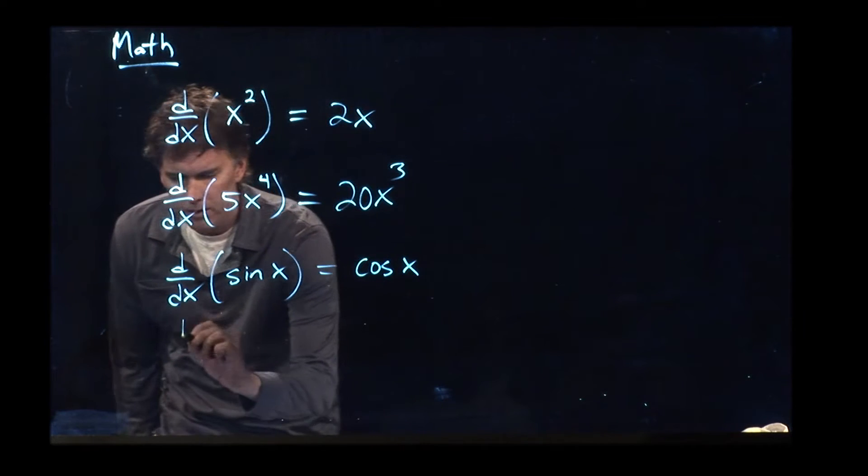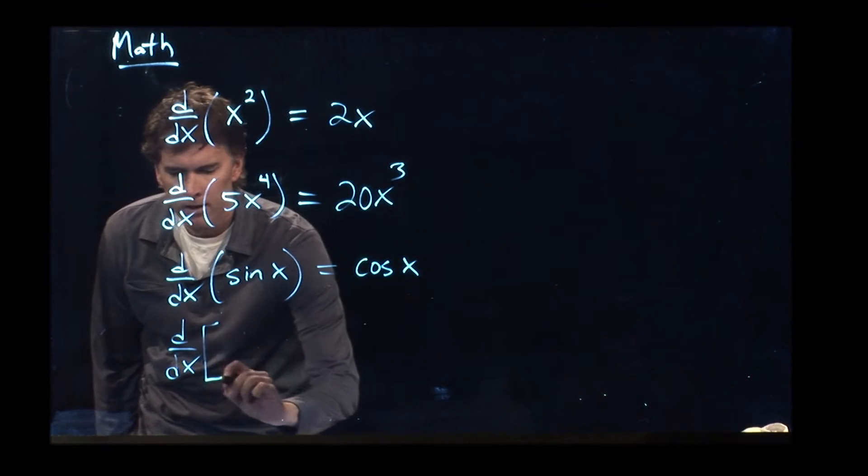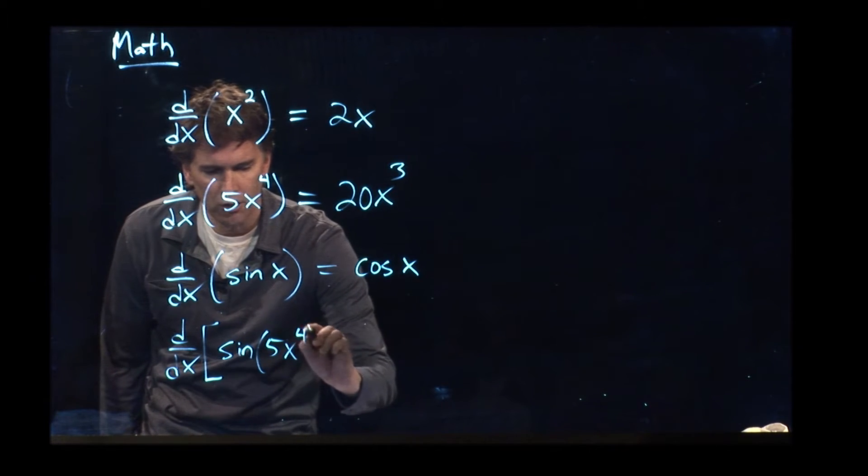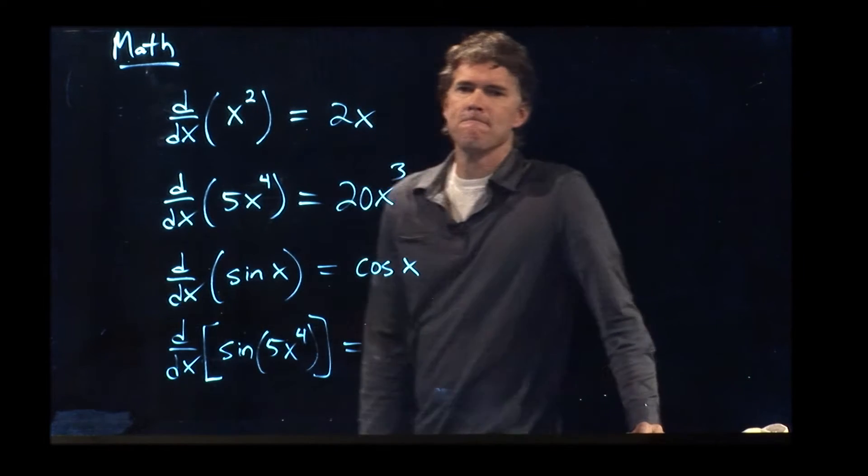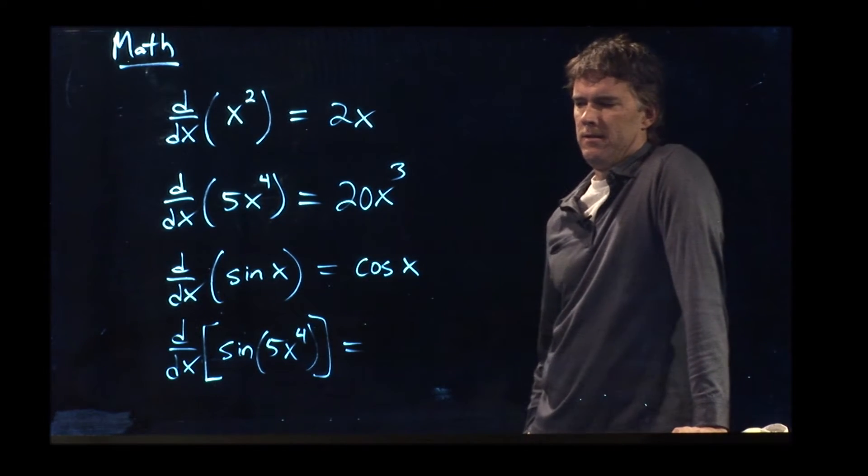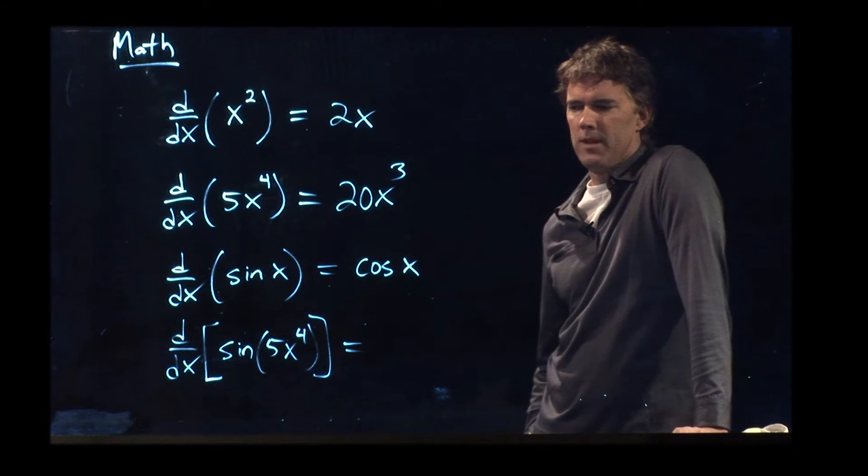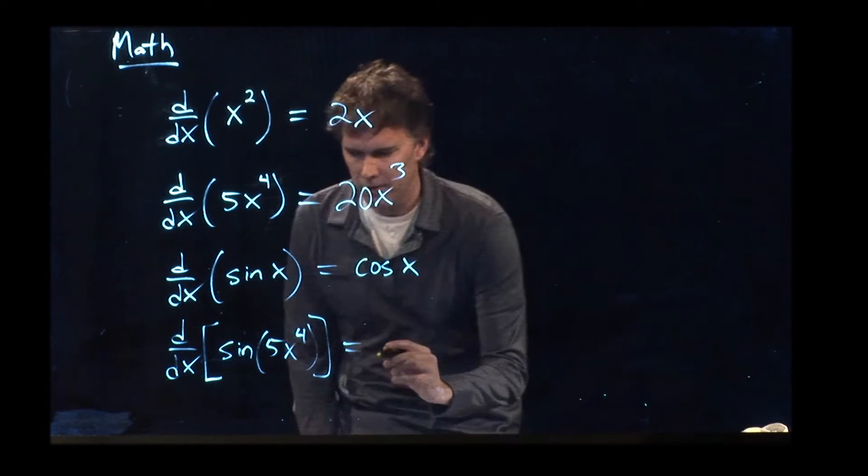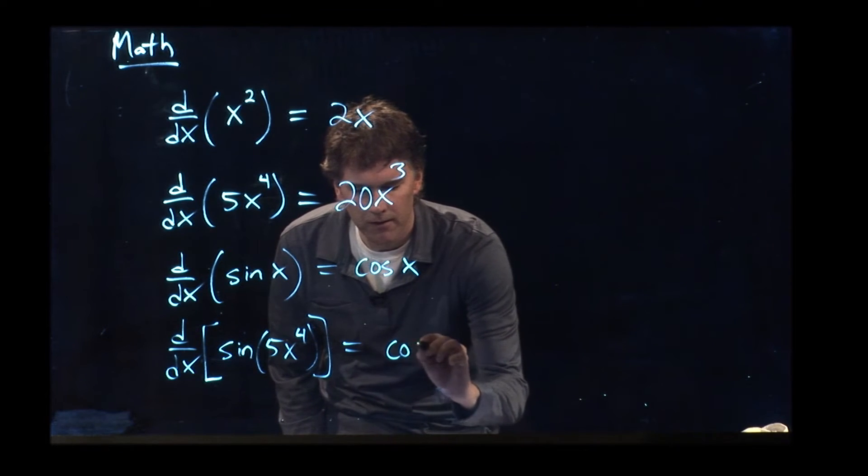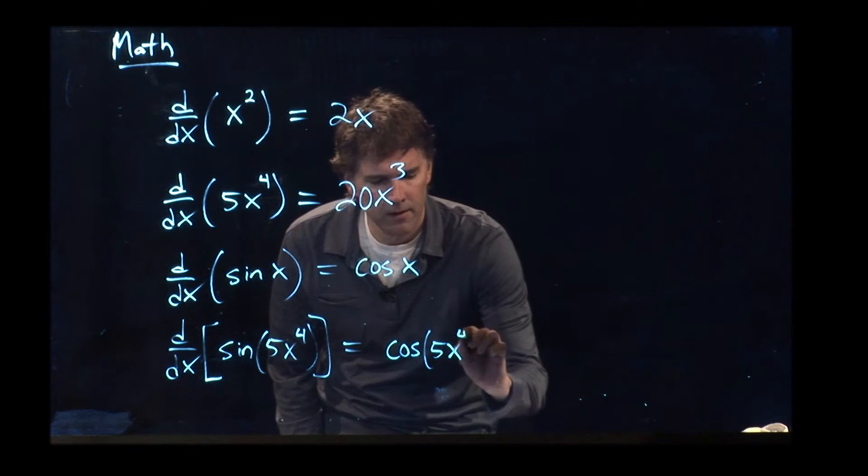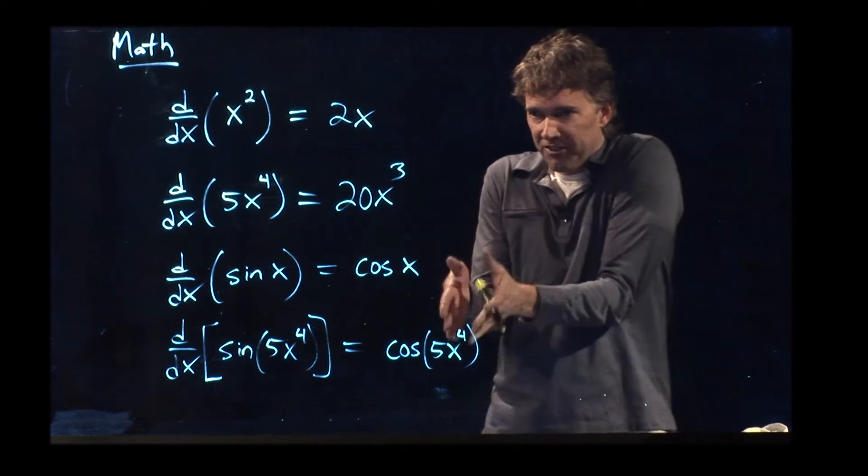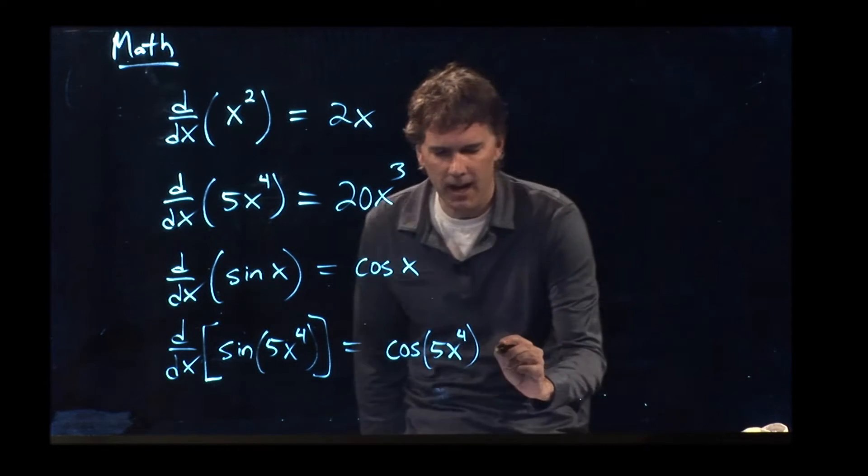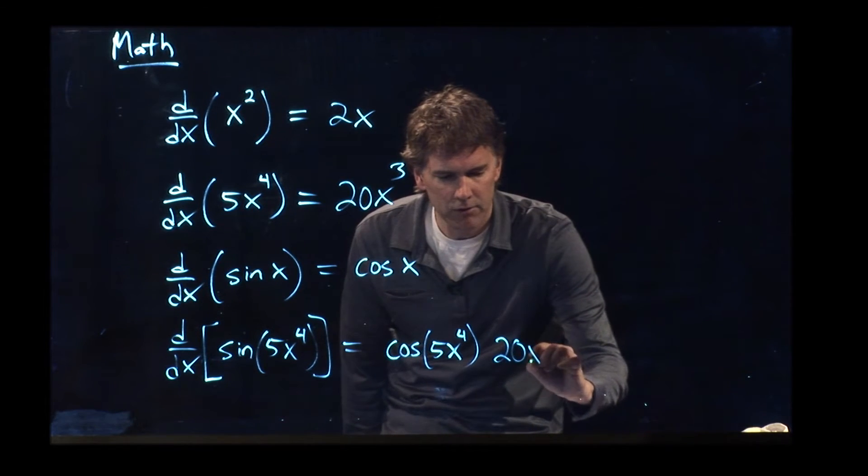What about the derivative of the sine of 5x to the 4? Cosine of 5x to the fourth, 20x cubed. That's right. You use the chain rule. You take a derivative of the whole thing, which is sine becomes a cosine. But then you have to take the derivative of the stuff inside. And the derivative of the stuff inside is 20x cubed.